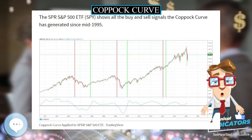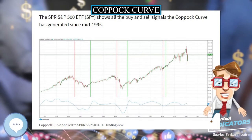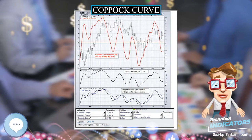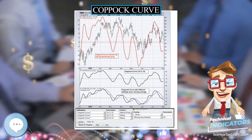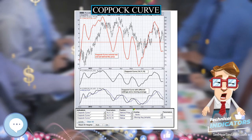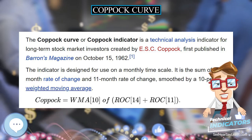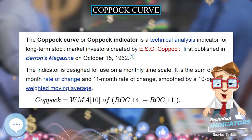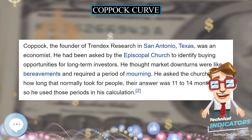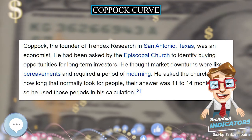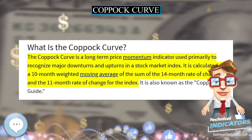A slightly different version of the indicator is still used by the Investor's Chronicle, a British investment magazine. The main difference is that the Investor's Chronicle version does include sell signals, although it stresses that they are to be treated with caution, because such signals could merely be a dip in a continuing bull market.